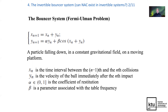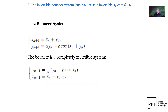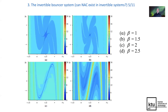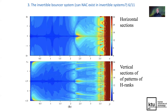The bouncer system describes a particle falling down in a constant gravitational field on a moving platform. As mentioned, it is completely invertible. The bifurcation diagram is shown at fixed alpha and varying beta, with patterns of H-ranks at different beta values. These three-dimensional H-rank patterns, when sectioned, result in plane images and plane patterns of H-ranks in horizontal and vertical sections.